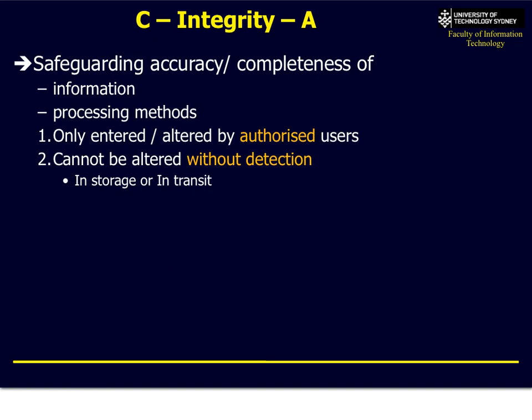The second concept is integrity. We might be authorised, have access to information, be in the correct location, and have used the right protocols — but what if somebody alters data? For example, you enter a credit card to buy something from eBay and suddenly you have ten orders instead of one. The vendor will be very happy; you won't be. We need to make sure the information is correct, it's processed correctly, and it hasn't been changed without your knowledge — whether in storage on disk, or in transit over the web.